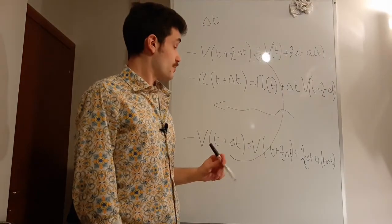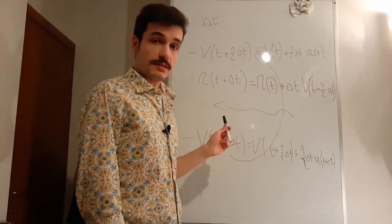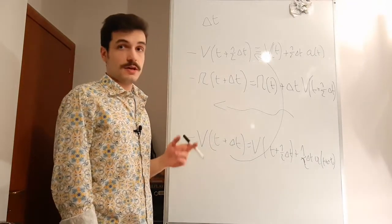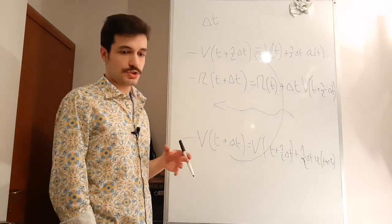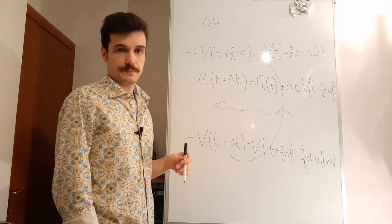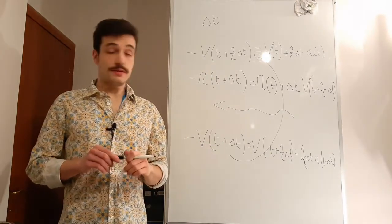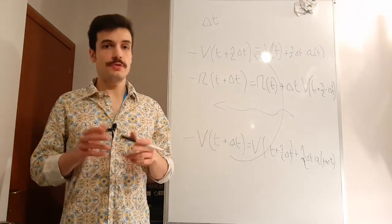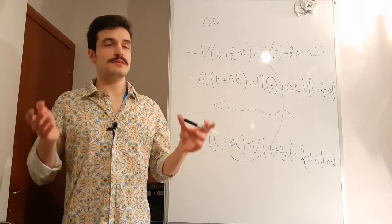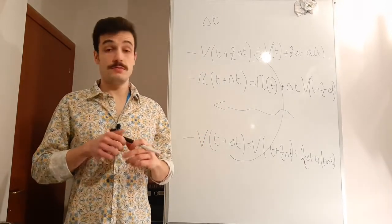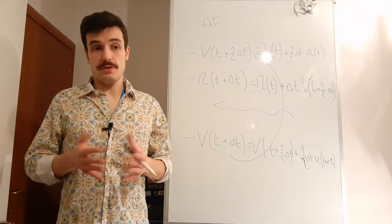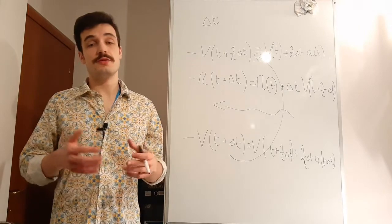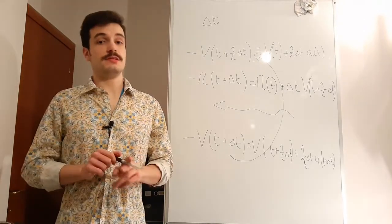That's the velocity Verlet algorithm. The interesting thing is that this is one of the algorithms that conserves a pseudo-Hamiltonian, so we know the divergence of the energy won't be dramatic. If you are interested, there are plenty of other algorithms like leapfrog, the classical Verlet, predictor-corrector, etc. There are a huge number of them and I may talk about them in different videos. In any case, you can find a good discussion about these algorithms in the books written in the description.